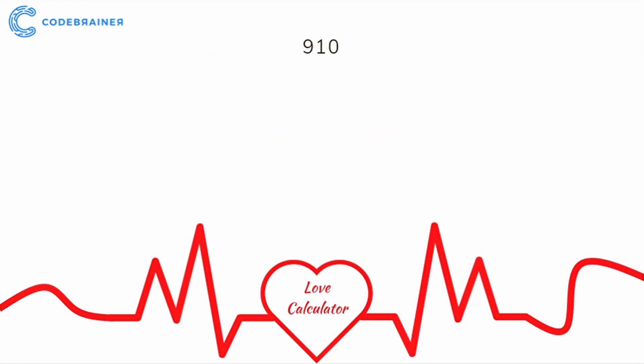What if we end up with 910%? We need one more step. We add together 9 plus 0 and write down 9. There is only one number left, so we just write down 1. And this gives us 91% of love — and may we say, this is a great love percentage.